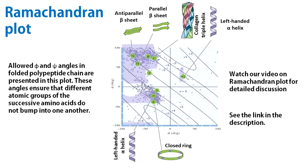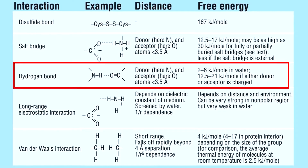Allowed values of phi and psi angles are represented as the Ramachandran plot. The Ramachandran plot tells us about the conformations that a polypeptide chain can adapt, but it does not tell us whether these adapted conformations will be stable.